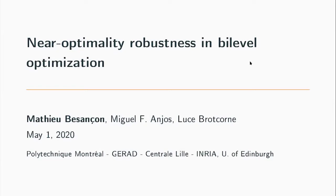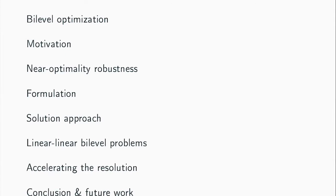I'll be talking about near-optimality robustness, which is an extension in a general forum for bi-level optimization — strengthening the formulation of bi-level problems. I'll give a small refresh on bi-level optimization itself, then the motivation for the problem: why do we care about near-optimality robustness, why would we make bi-level problems harder? And then we'll focus on a formulation and solution approach for the convex and linear cases.